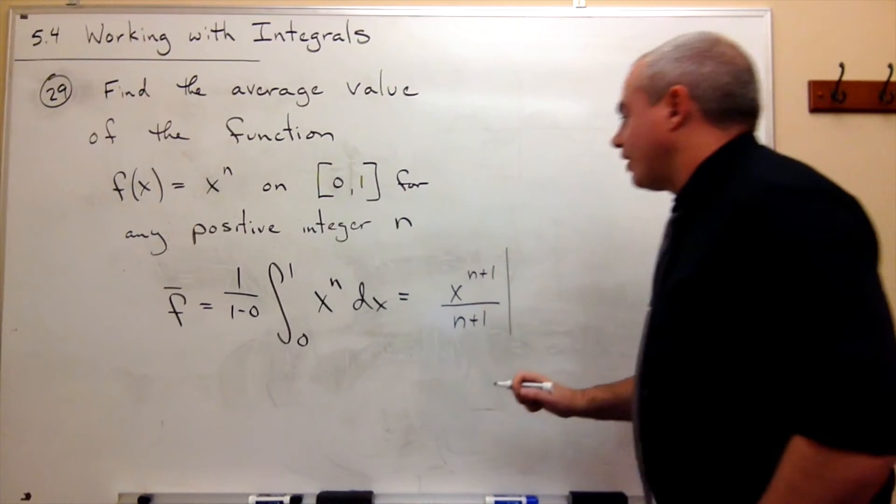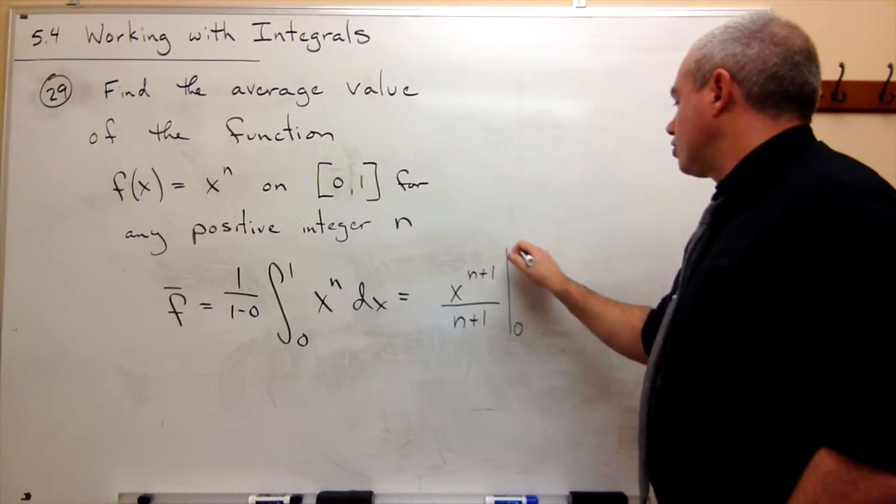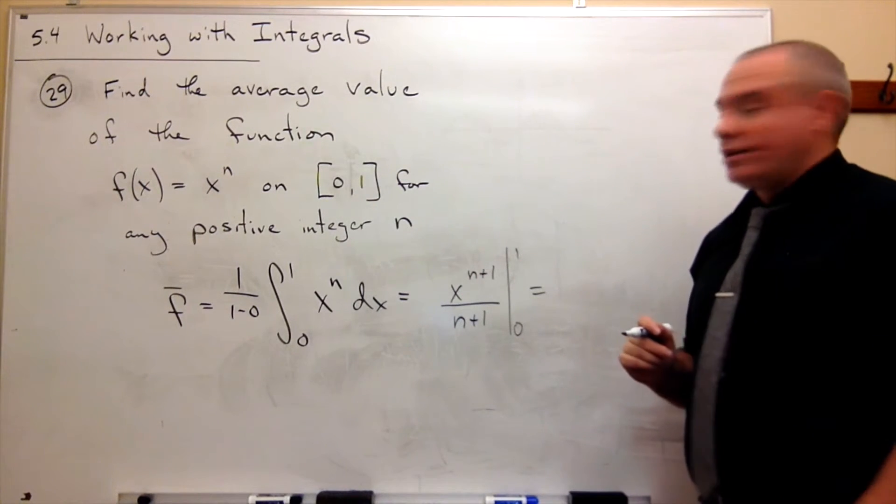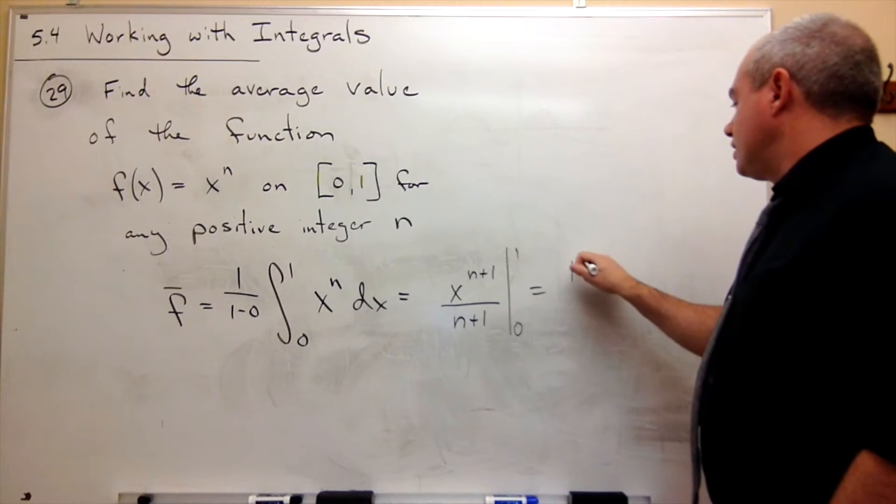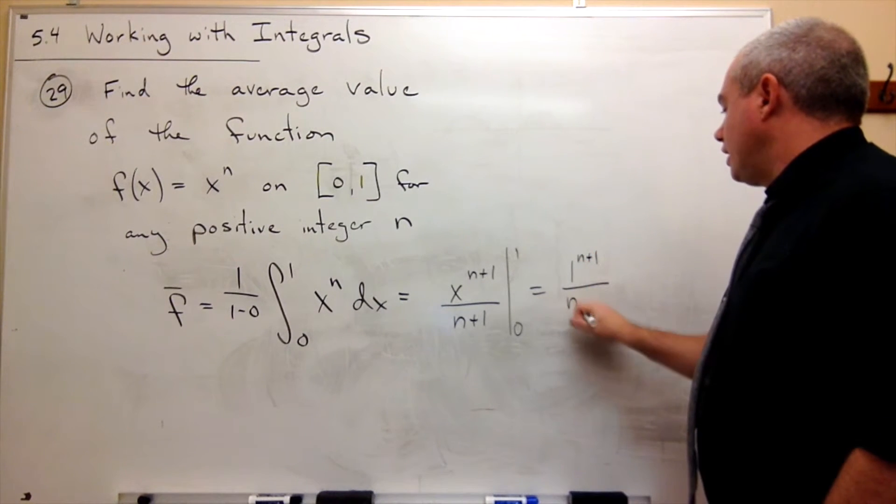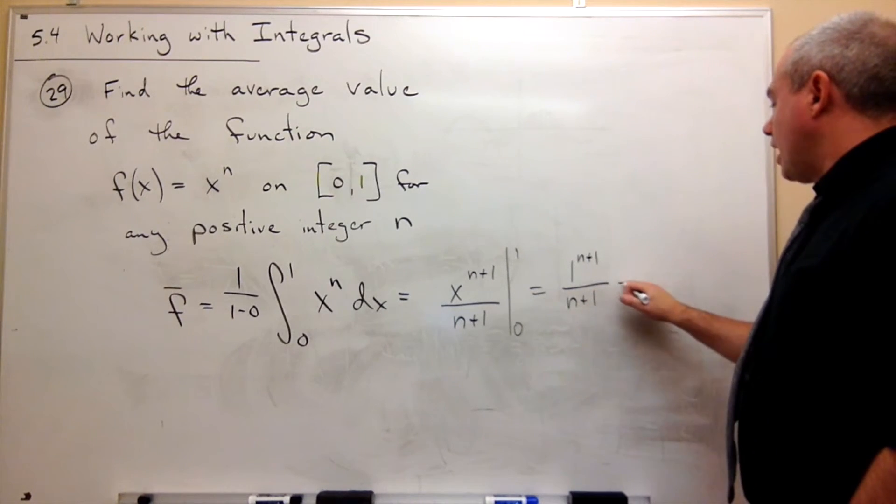and that's going to be evaluated from 0 to 1. If I plug in 1 here, I get 1 to the n plus 1, but 1 to the n plus 1 is just 1 over n plus 1, minus...